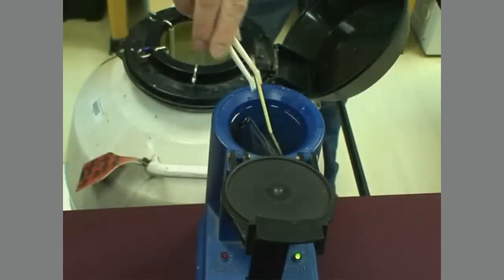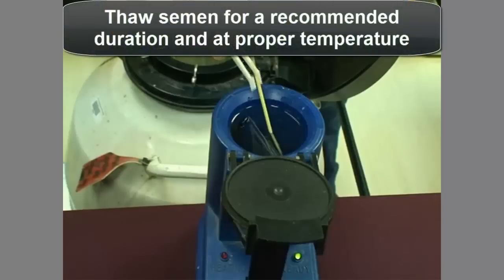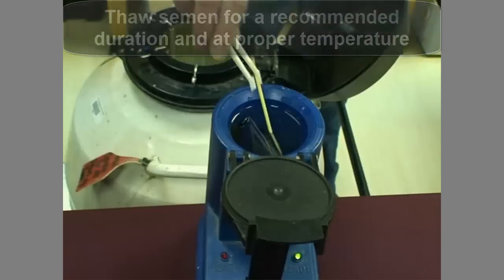Warm water thawing of the semen straws generally takes 30 to 60 seconds. Thawing recommendations vary by semen processor. When possible, use the thawing recommendations from the AI organization that processed the semen. In cases where semen from multiple processors is used, decide on one thawing procedure to use.